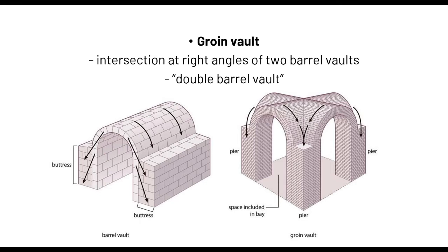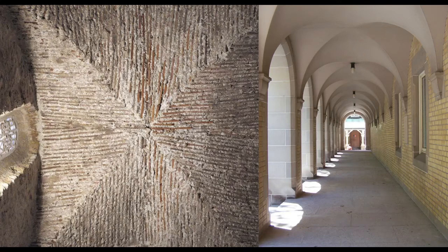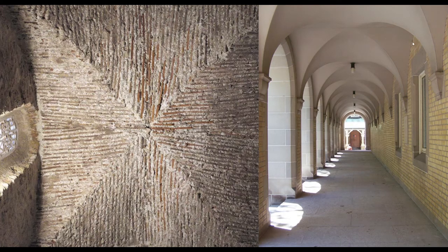This is an example of how a groin vault looks in real life. The left image shows how it would have looked during the era of stone and masonry, and the right image is a sample of a barrel vault in a modern application. There is still a chance to apply such vaulting systems even in modern times, especially if your design theme is Roman, Romanesque, or classical.